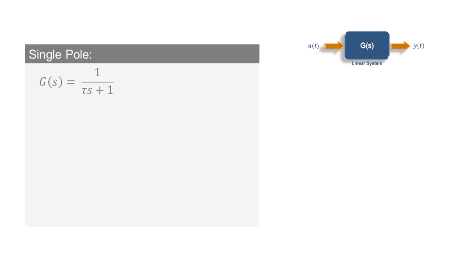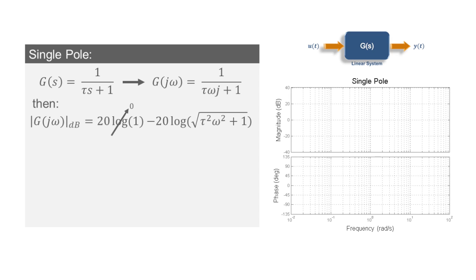Now, let's move on to a first order construct like a single pole with a time constant of τ. Once again, if we want to look at the frequency response, we need to replace s by jω. The magnitude of that vector will be log of 1, which goes to 0, minus 20 times the log of the magnitude of that denominator. On first impression, this looks like it is going to be very hard to draw, but if you think of that expression on an asymptotic manner and break the diagram in two parts,